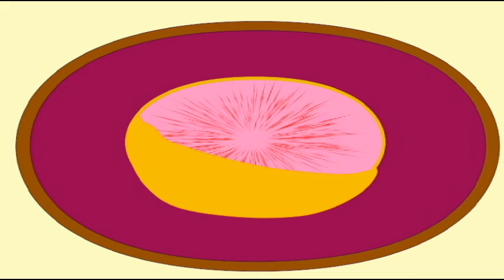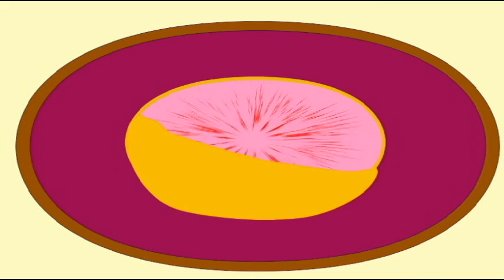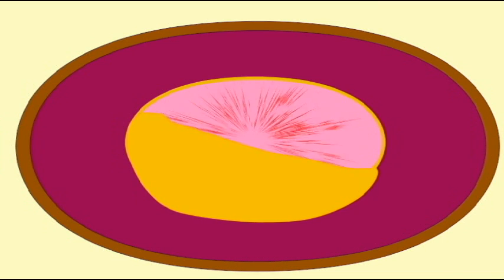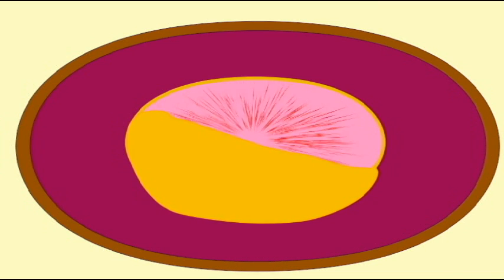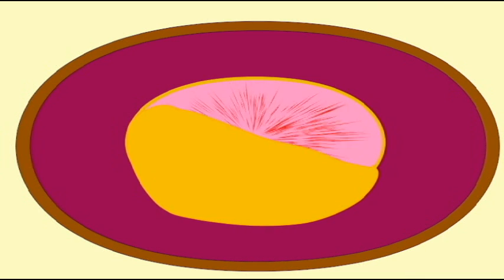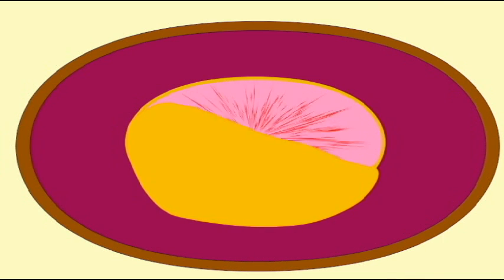This lipid plaque begins then to occlude the opening of the blood vessel, the lumen, which then makes it more difficult for blood to flow. This will increase blood pressure if this occurs widespread throughout the body.